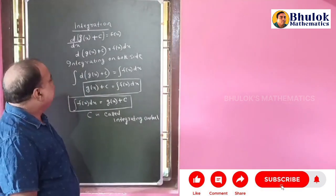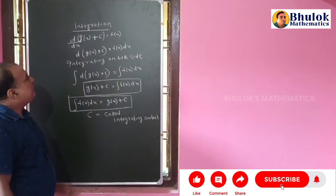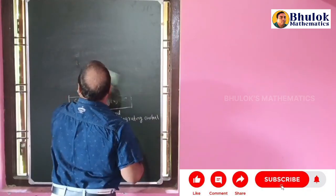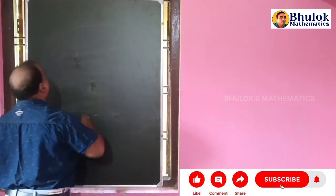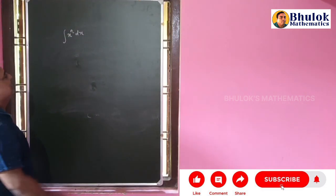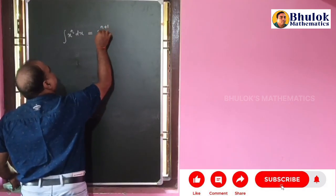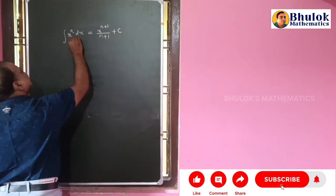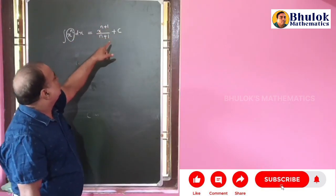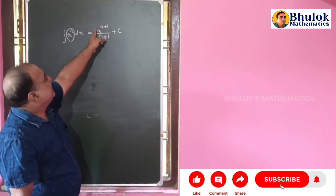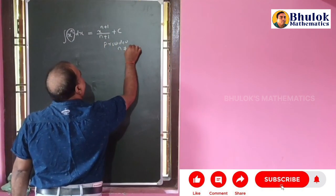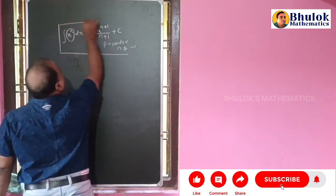Integration is otherwise called as primitive or anti-derivative. Now we have to find some formulas related to integration. The first formula: the integral of x^n dx is equal to x^(n+1) divided by (n+1) plus c. Our aim is to find the function whose derivative is x^n. The answer is x^(n+1) divided by (n+1), provided n is not equal to minus 1.